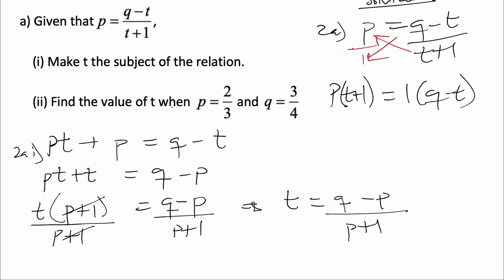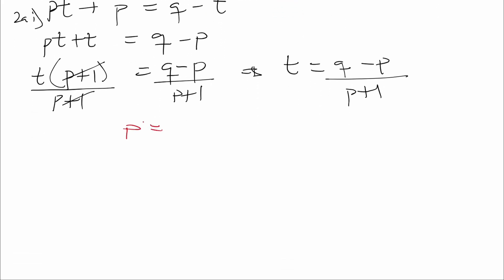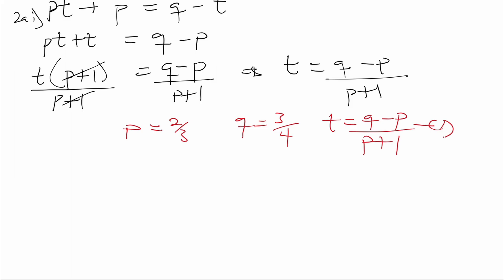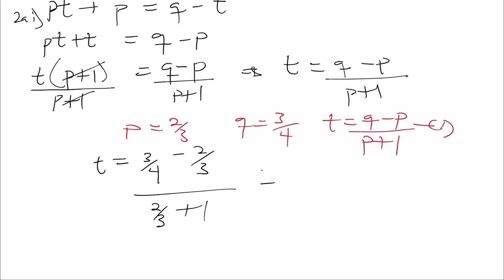Now for part (ii), find the value of t when p is 2/3 and k is equal to 3/4. We have our expression t equals (k minus p) all over (p plus 1). We substitute k = 3/4 and p = 2/3. So t equals (3/4 minus 2/3) all divided by (2/3 plus 1). Now 3/4 minus 2/3 gives us 1/12.